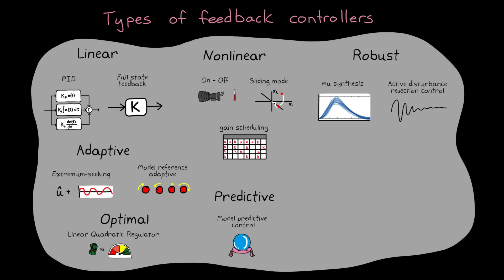There are predictive controllers like Model Predictive Control that use a model of the system inside the controller to simulate what the future state will be and therefore what the optimal control input should be in order to have that future state match the reference. There are intelligent controllers like Fuzzy Controllers or Reinforcement Learning that rely on data to learn the best controller. And there are many others.